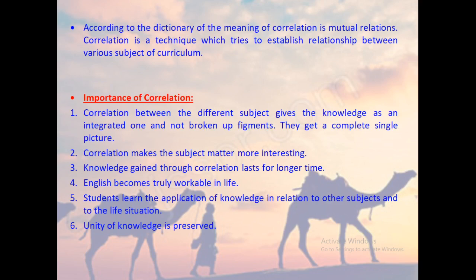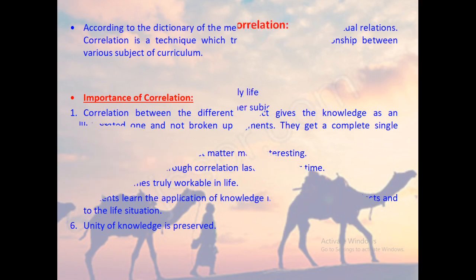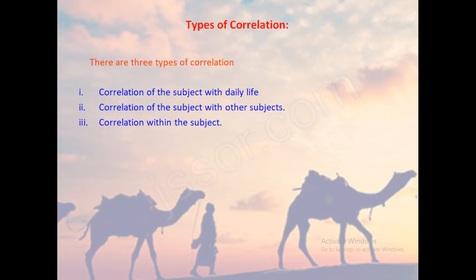When we speak about the correlation of English language, there are three types of correlation. First, correlation of the subject with daily life. Second, correlation of the subject with other subjects. Third, correlation within the subject itself.